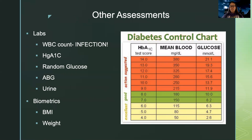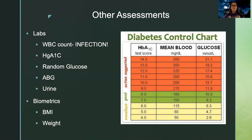Speaking of checking labs — we always want to check a white blood cell count to look for infection. We want to do a hemoglobin A1c to see how their blood sugar has been over the past few months. We can also check a random glucose level, an ABG to see if they're in a state of acidosis — especially relevant for type one diabetes patients. We want to check their urine for protein or the presence of albumin, which can be a sign of decreased kidney function. We also want to look at their BMI and weight to see if lifestyle modifications can improve their diabetes.